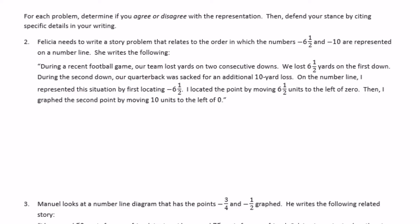Felicia needs to write a story problem relating to the order of negative six and a half and negative ten on a number line. She writes: during a recent football game, our team lost yards on two consecutive downs — we lost six and a half yards on the first down, and our quarterback was sacked for an additional ten yard loss on the second down. If we lost six and a half, that's negative six and a half, and the sack is another negative ten yard loss. She located negative six and a half by moving six and a half units to the left of zero, and graphed negative ten by moving ten units to the left of zero — both correct since they're both negative. So I agree.